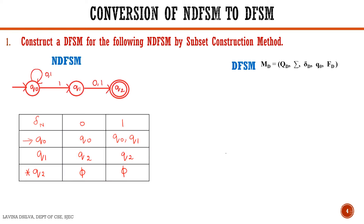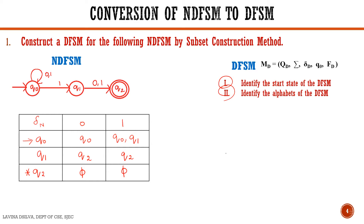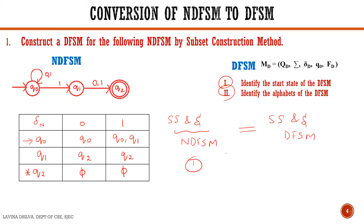Given an NDFSM, for the first two steps — identifying the start state and alphabets of the DFSM — we know that the start state and alphabet set of the NDFSM become the start state and alphabet set of the DFSM. Therefore, Q0 is the start state of the DFSM, and sigma equals {0, 1}, the same input alphabet as the NFSM.